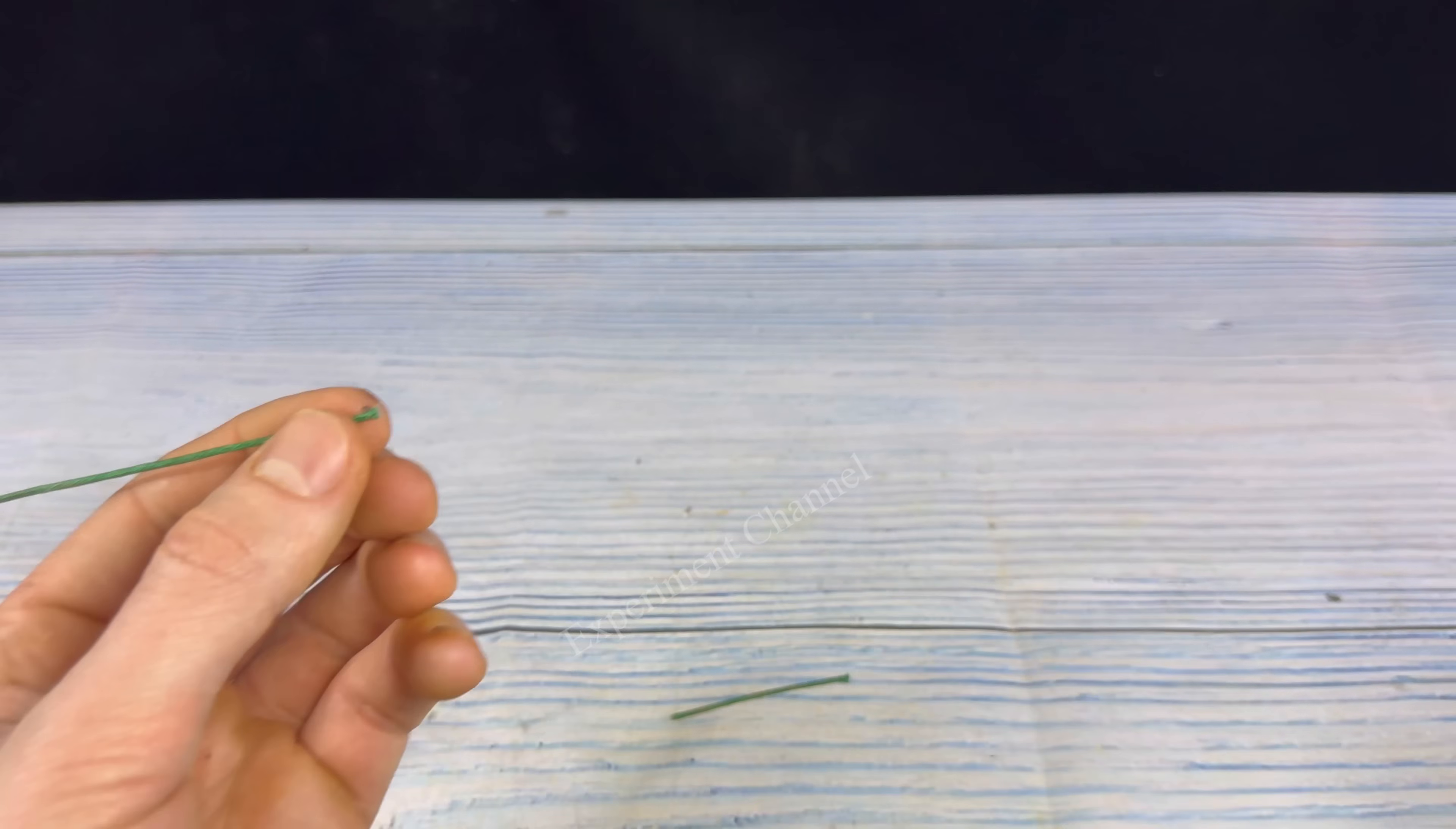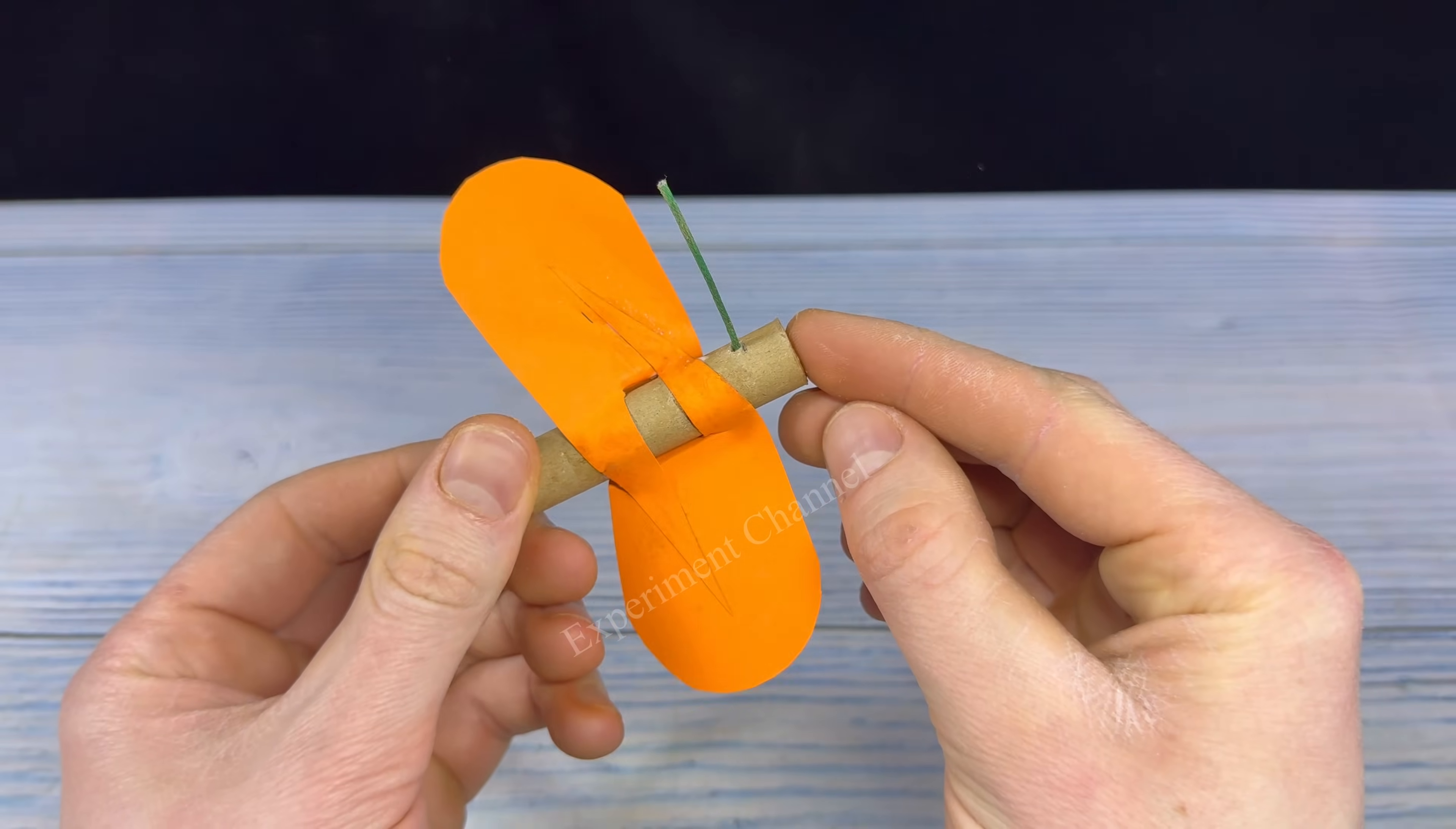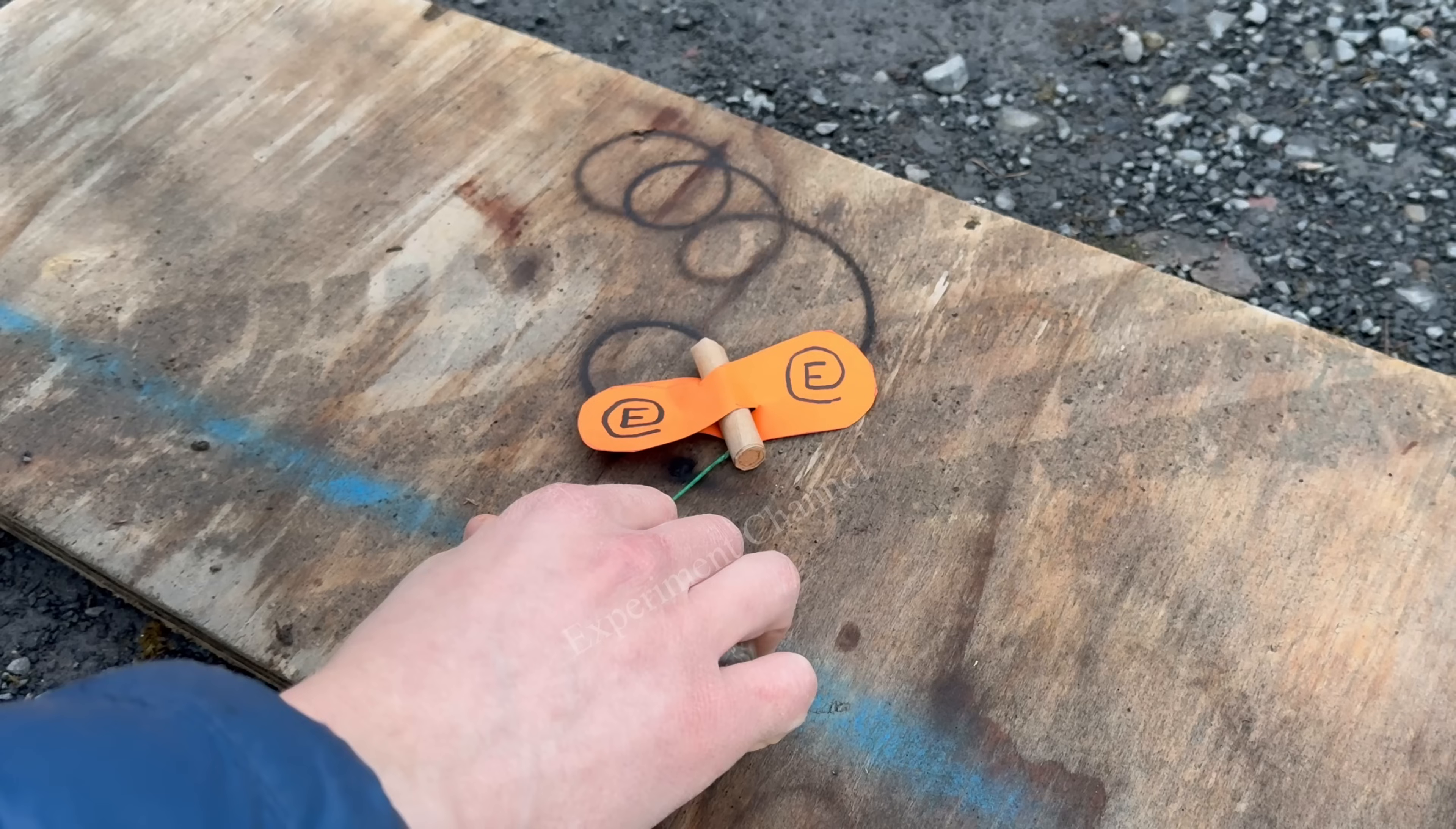Now all there's left to do is add our fuse. And there you have a homemade spinning bee firework or butterfly, whatever you like to call it.